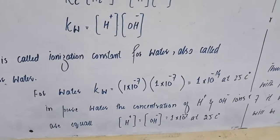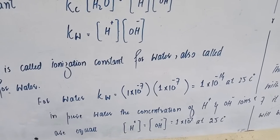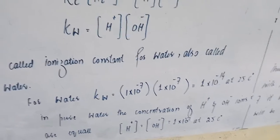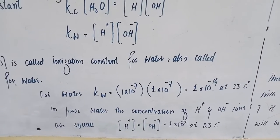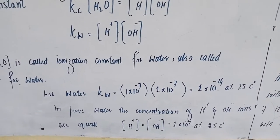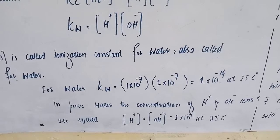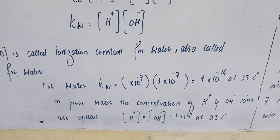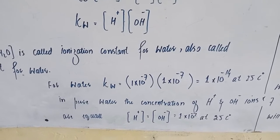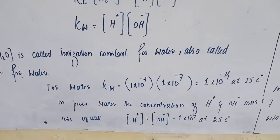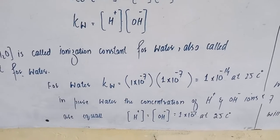For water, Kw equals 1 × 10⁻⁷ multiplied by 1 × 10⁻⁷, which equals 1 × 10⁻¹⁴ at 25°C. In pure water, the concentration of hydrogen ions and hydroxyl ions are equal: [H⁺] equals [OH⁻] equals 1 × 10⁻⁷ molar at 25°C.